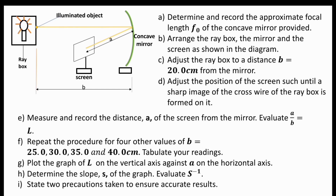Tabulate your readings. Plot the graph of l on the vertical axis against a on the horizontal axis. Determine the slope x of the graph and afterwards evaluate s raised to the power of minus one. State two precautions taken to ensure accurate results. So these are the instructions to the question — now we begin.